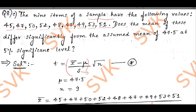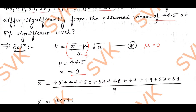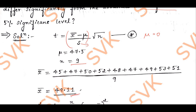Moving on to the solution part: n contains 9 values and μ is given as 47.5, the assumed mean. If they don't mention mean, you need to consider μ equal to 0 — remember this while solving the problem. To calculate x̄, take the sum of all values divided by n.